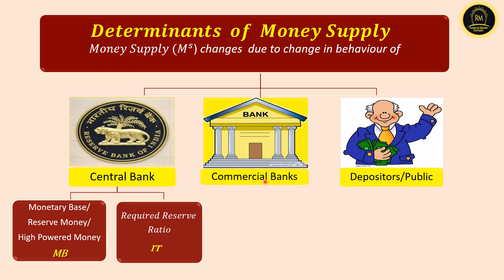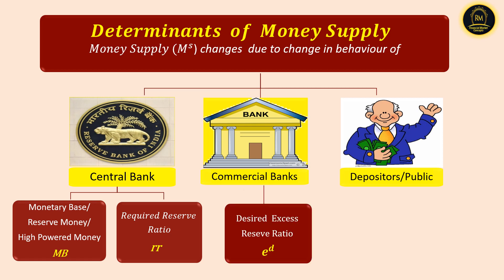The commercial bank determinant of money supply includes the desired excess reserve ratio. This is the excess reserve held by commercial banks over and above the required reserve. Required reserve comprises CRR and SLR. If a commercial bank keeps reserves over and above the required reserve, that is called excess reserve. Keeping excess reserves means banks are not fully loaned up — it is a leakage in the money multiplier process — and that is going to reduce the money supply in the economy.